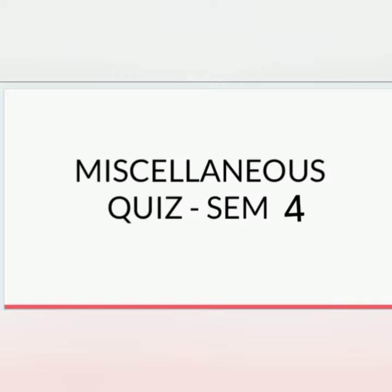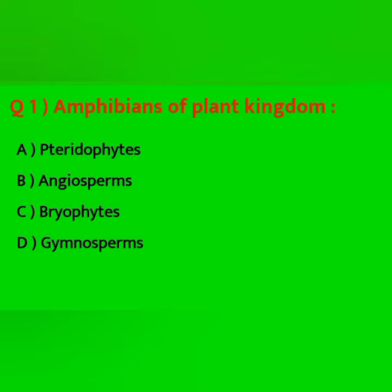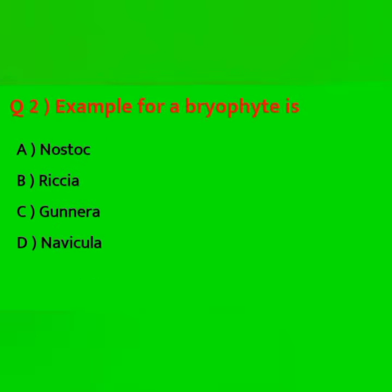Question: Amphibians of plant kingdom. Options: Pteridophytes, Angiosperms, Bryophytes, Gymnosperms. Answer: Bryophytes. Next question: Example for a bryophyte. Options: Nostoc, Riccia, Gunnera, Navicula. Answer: Riccia.